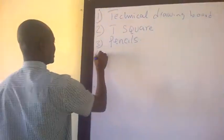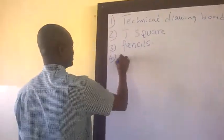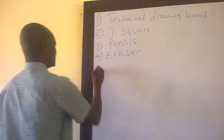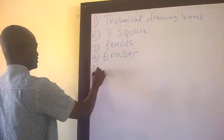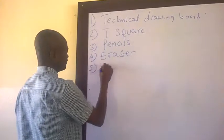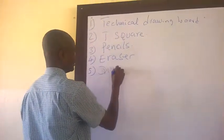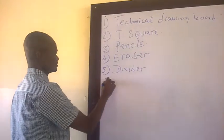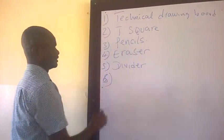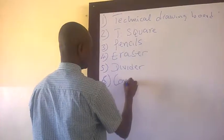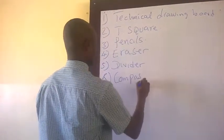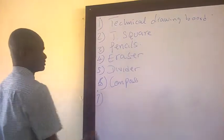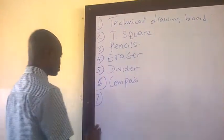The fourth thing here is the eraser. The fifth is the divider. The sixth is the compass. The seventh is the protractor.